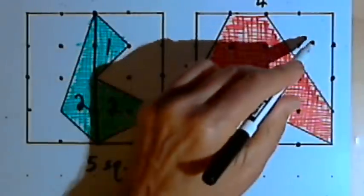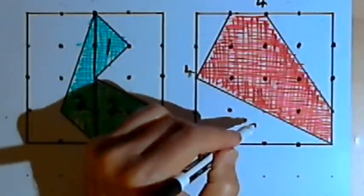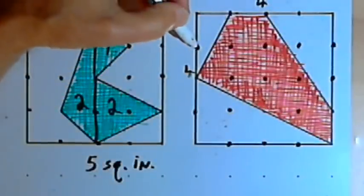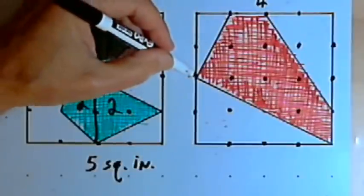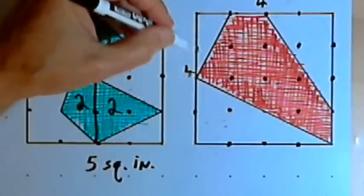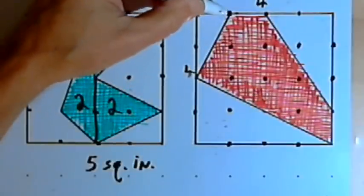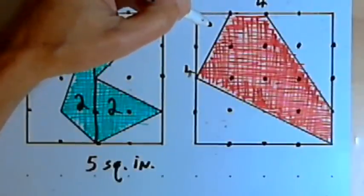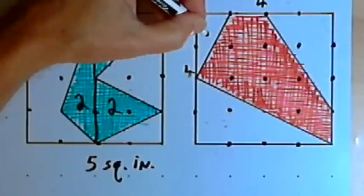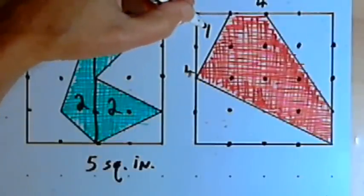Now I'm going to find the area of each of these three triangles. This triangle over here, we could call this left side the base. That would have a base of 2 and a height of 1. So the area would be the base times the height, 2 times 1, divided by 2, which would be 1. This area is 1 square inch.